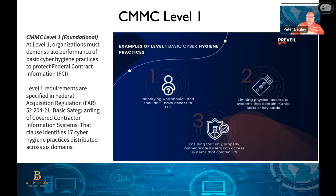Level 1 foundational covers basic cyber hygiene practices for FCI. It asks: do you have the basic things in place to protect information? Do you have a network stack, a router, switches, firewalls? How are you managing access control lists? How are you managing your AWS buckets? How are you protecting what you're working with? The Level 1 requirements are specified in the FAR 52-204-21 and the basic safeguards of covered contract information systems.